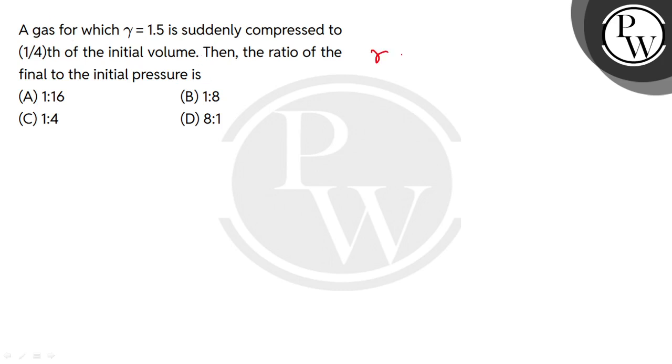So a gas for which gamma equals 1.5 is suddenly compressed. This is adiabatic compression. If I consider V, how much is the final volume? 1/4th of the initial volume. That means V/4.